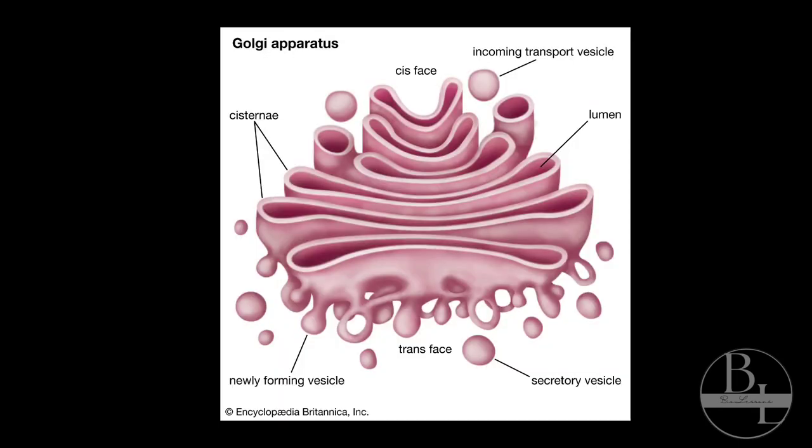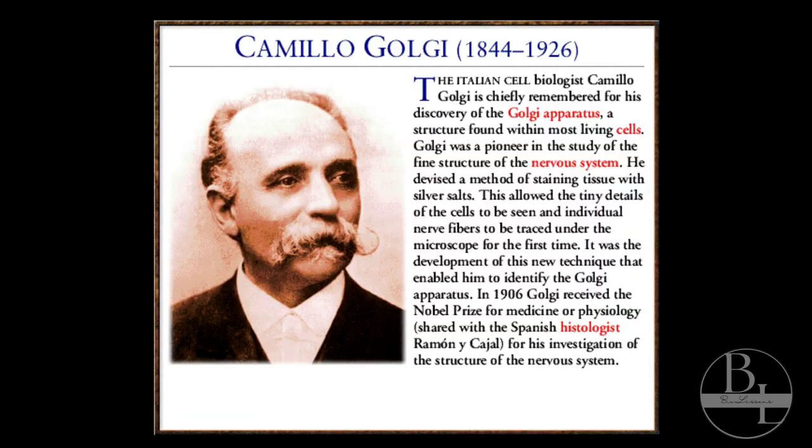Hello everyone, welcome to my channel Bio Lessons. My name is Alpana. Do you know the packaging machine of the cell? It is the Golgi complex. Why is it called so? Let's see. Golgi complex is named after Camilo Golgi, who first described its structure. Various terms are used to denote this assembly, like Golgi apparatus, Golgi complex, or Golgi body.